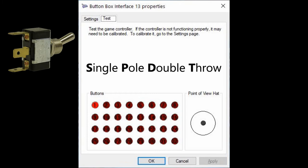Now let's look at a single pole double throw switch. Here the handle is up, then down, up, down.